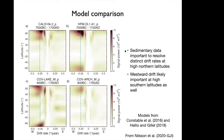To confirm these aren't model-specific artifacts, we look at different models from Constable et al. 2016 and Hellio and Gillet 2018, and see a very similar picture — isolating two distinct drift rates of 0.25 and 0.09 degrees per year at high northern latitudes. The only model that doesn't capture the slow drift rate well is the one that excludes sedimentary data, highlighting that sediments are important for resolving the high-latitude core signal.